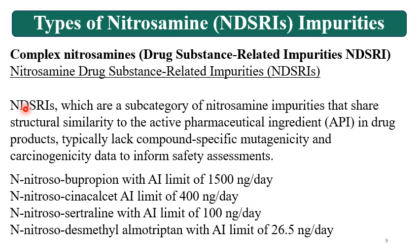These are API-like structures. Examples include N-Nitrosobupropion, N-Nitrosocenacalcate, N-Nitrosocertaline, and N-Nitrosodesmethylamble tryptan. These have AI limits ranging from 1500 nanograms (highest), 400 nanograms, 100 nanograms, down to 26.5 nanograms per day. The 26.5 ng/day represents the most potent Nitrosamine limit, while 1.5 µg/day corresponds to the ICH M7 guideline threshold. Reading ICH M7 will give better clarity on these values.